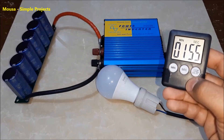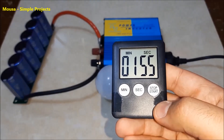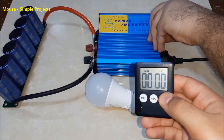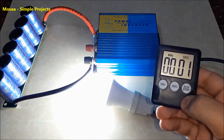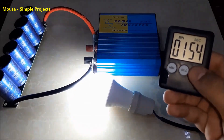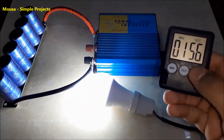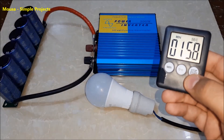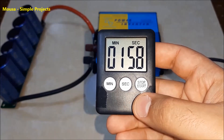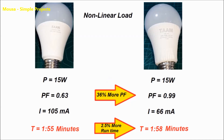As you can see, it takes 1 minute and 55 seconds. Now running the second LED lamp with unity power factor, the lamp with higher power factor drains the supercapacitor bank after 1 minute and 58 seconds. So a 36% increase in power factor only increases the inverter runtime by 2.5%.